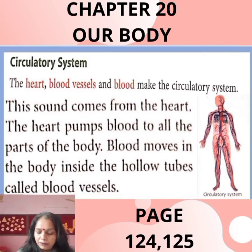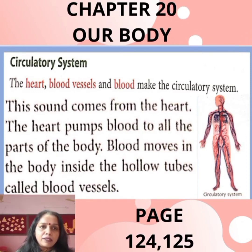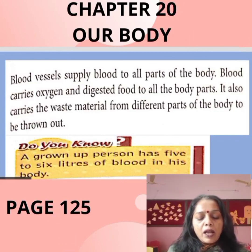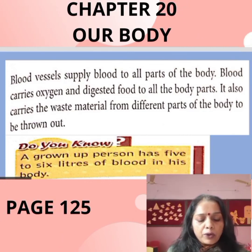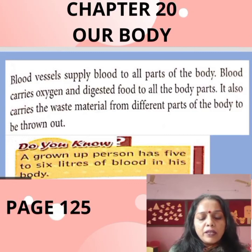Circulatory System. The heart, blood vessels, and blood make the circulatory system. The heart pumps blood to all body parts. Blood moves inside hollow tubes called blood vessels. Blood carries oxygen and digested food to all body parts. It also carries waste material from different parts of the body to be thrown out. Did you know? A grown-up person has 5 to 6 litres of blood in their body.